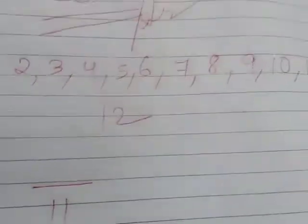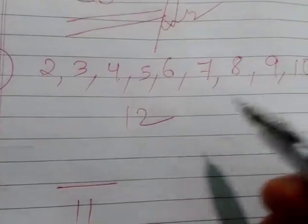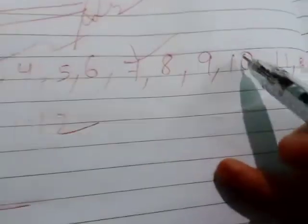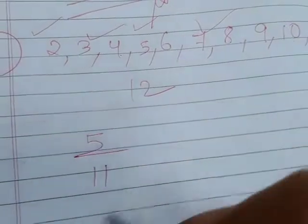We have to find the prime numbers. How many prime numbers are here? 1, 2, 3, 4, 5. So we will write here 5.